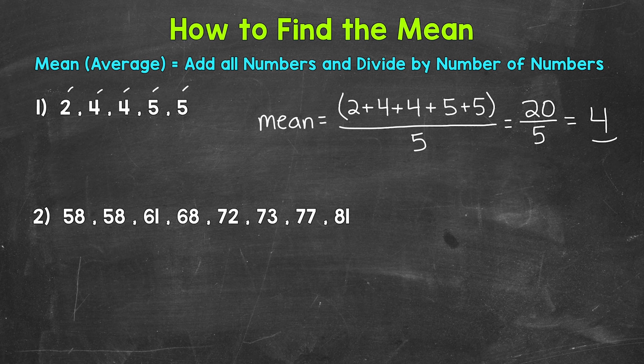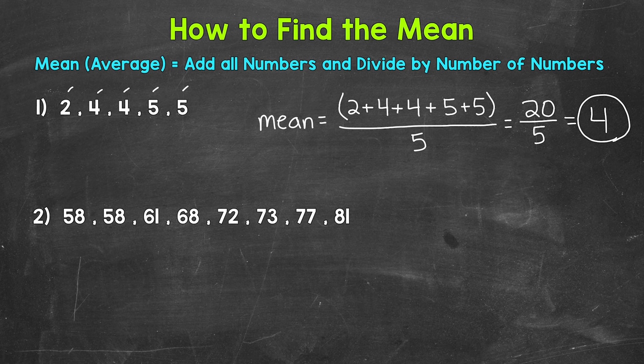So that's our mean for that data set. 4 is one number or value that represents or describes that data set. So let's move on to number 2, where we have double-digit numbers, and then we have more numbers within our data set.